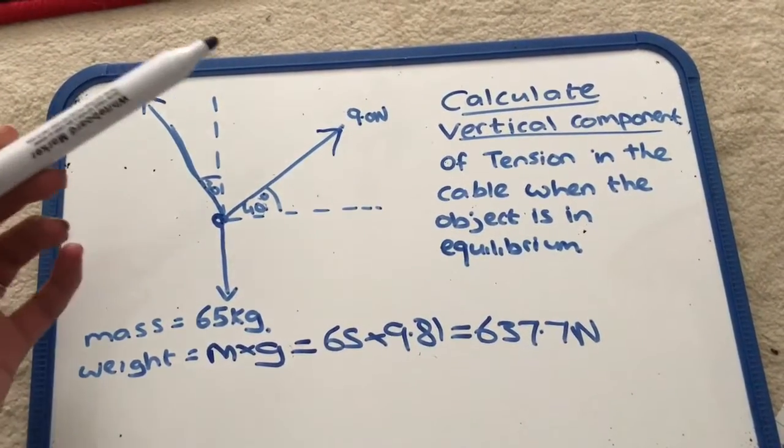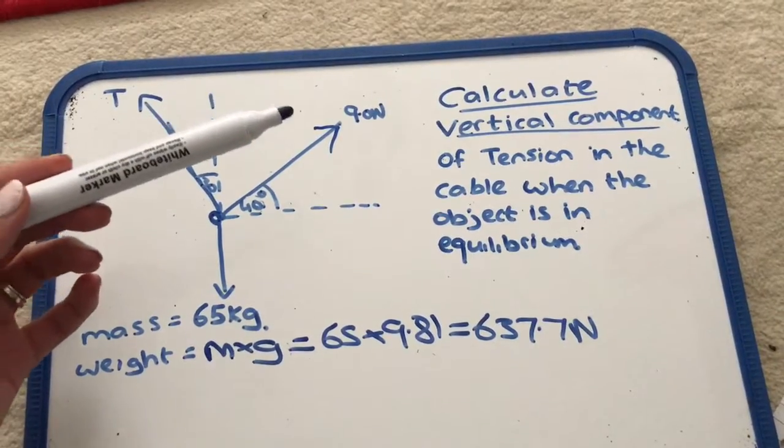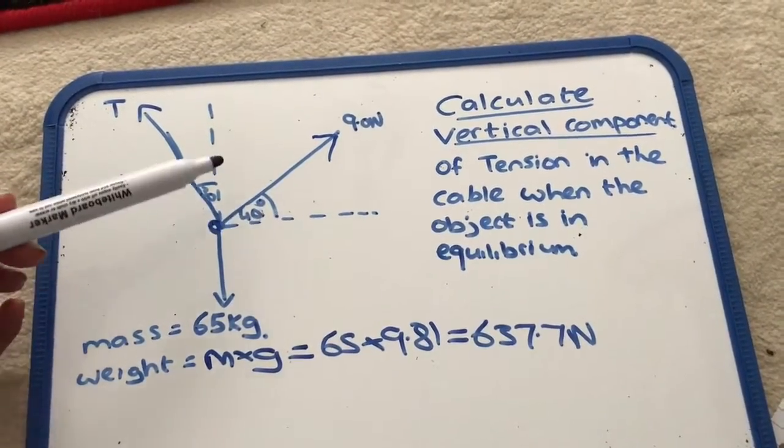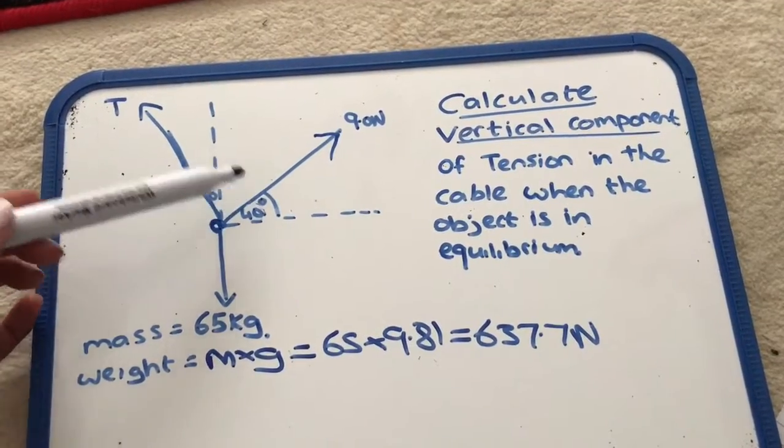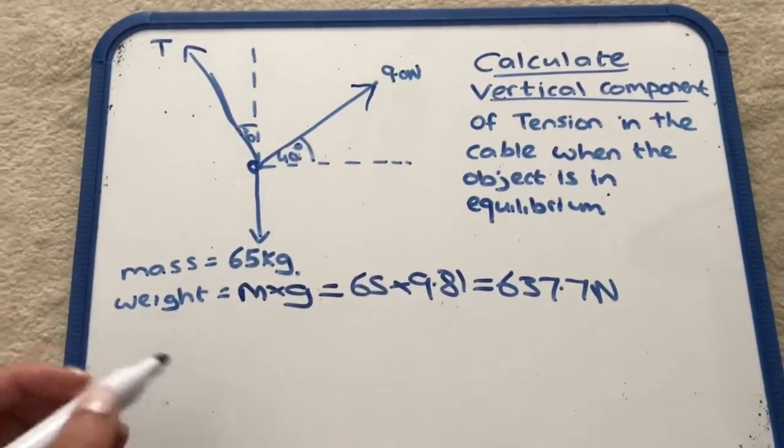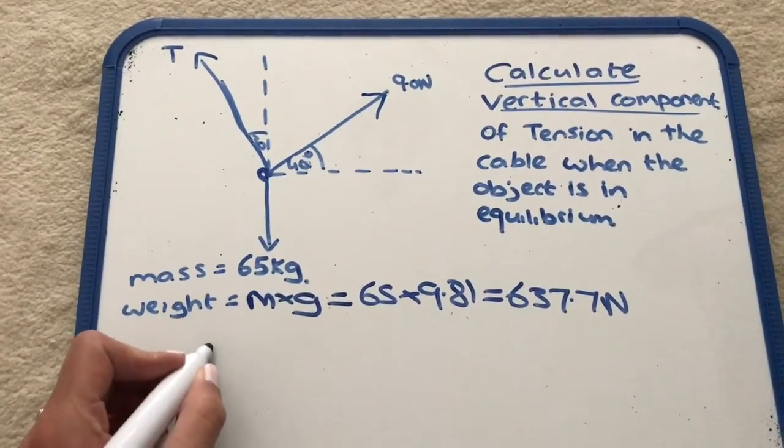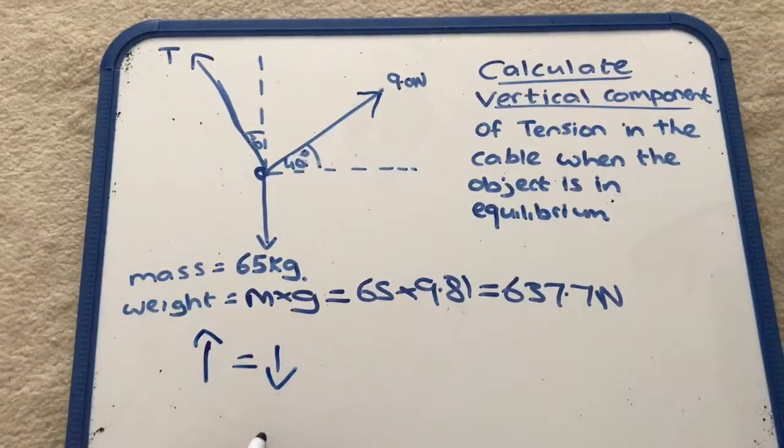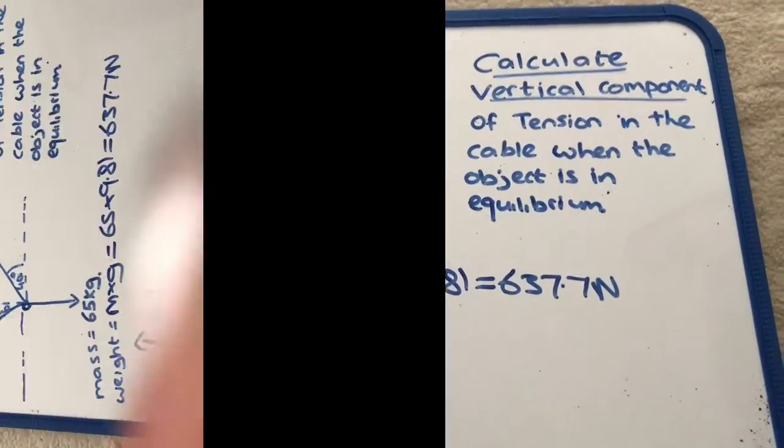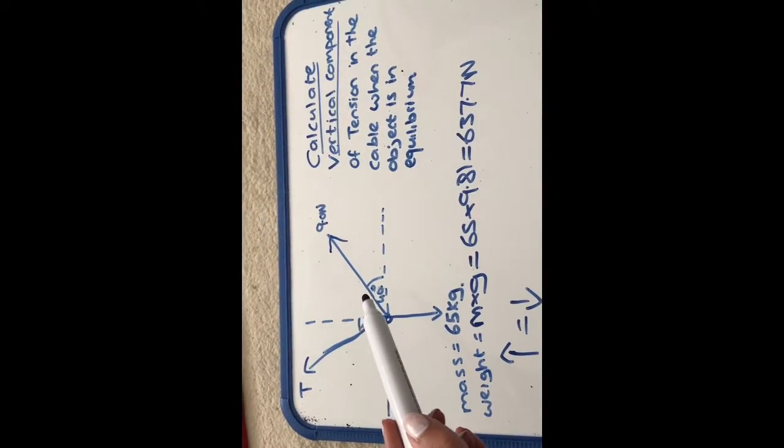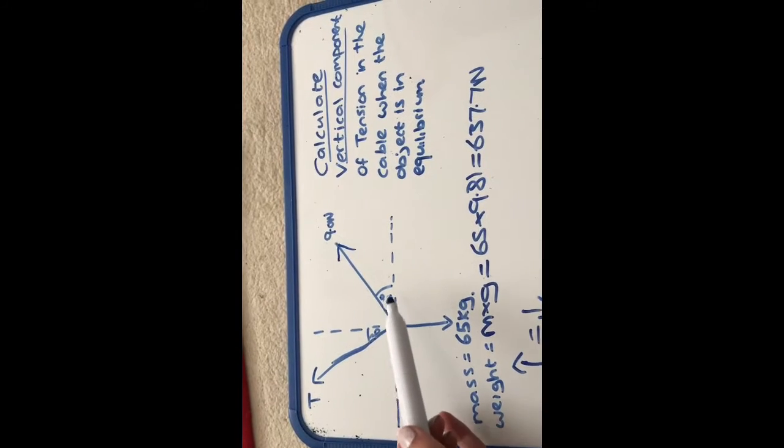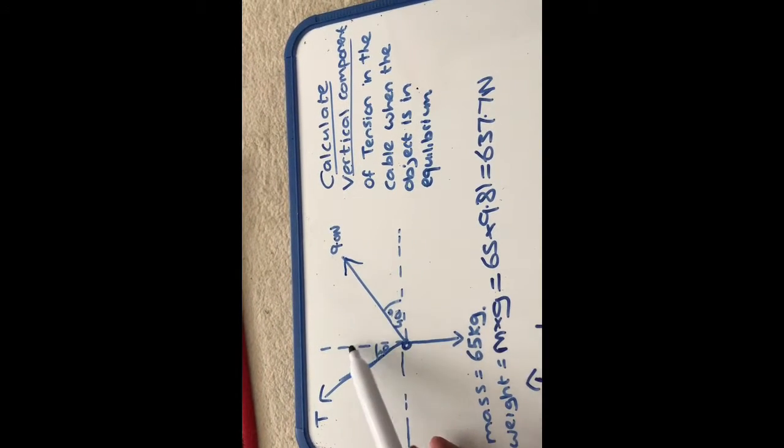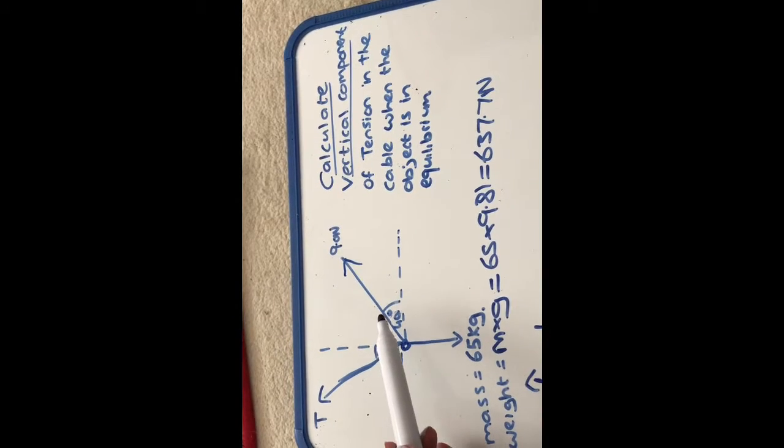Now, this one isn't asking for the horizontal components, we're only going to look at the vertical. So if something's in equilibrium, everything acting must be equal, so what goes up is equal to what goes down. This one can be easily resolved - the vertical will be 9 sin 40.